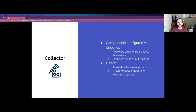Let's talk about the collector. The collector is a component configured via pipelines. Each pipeline is made up of one or more receivers — a way to get data into the collector, which can be push or pull based — then processors for what you want to do with the data as it passes through, and then exporters, also push or pull based, to send the data to the destination of your choice. One of the biggest features is that the collector can translate from one format — like the format it receives — into a different format for export, making it a vendor-agnostic solution. The collector can also do CRUD operations on metadata, which is powerful for things like PII reduction or enhancing telemetry data. Core concepts like resources are natively supported in the collector.